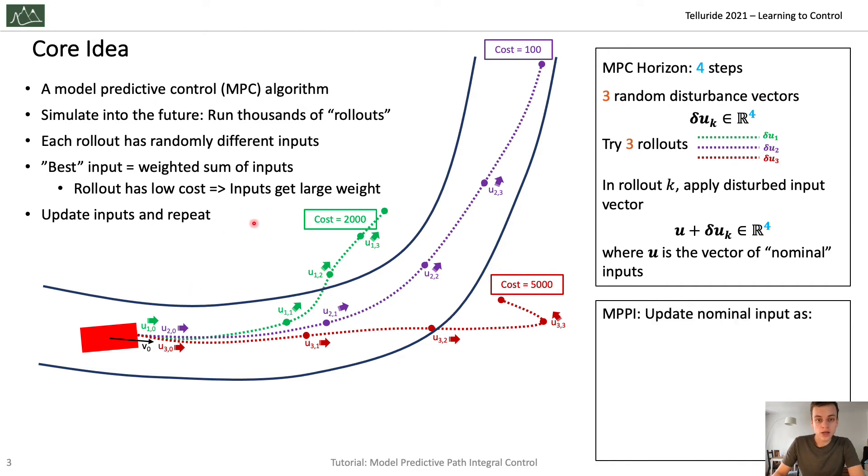Then after doing those rollouts, you update the nominal inputs. And this is the update law of MPPI. It looks like this: U is updated as U plus a weighted sum of the perturbations that were tried. And then you normalize the weights.